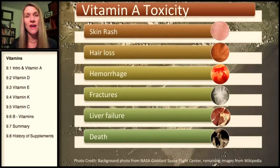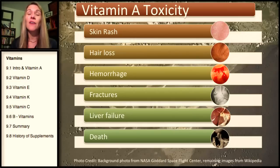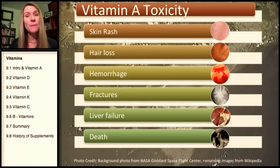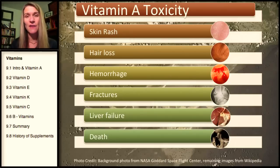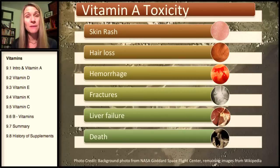Vitamin A toxicity — you don't see it that often, but vitamin A is considered the most toxic of all the vitamins. We used to lump A and D together, but we found out vitamin D toxicity is actually pretty rare. Vitamin A toxicity can result in skin rashes, hair loss, hemorrhage, fractures, liver failure, and even death. It's not so much from food — it's a combination of supplementation and fortification that gets people to the upper limit. If you're constantly eating fortified foods with vitamin A and then taking a supplement on top of that, you do have a chance of toxicity.